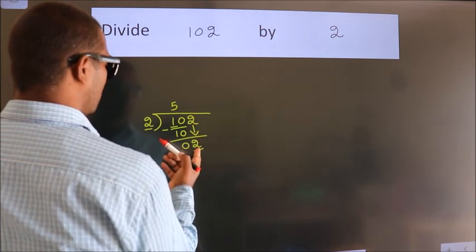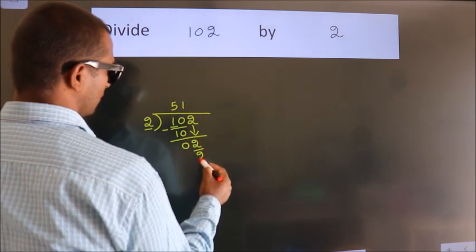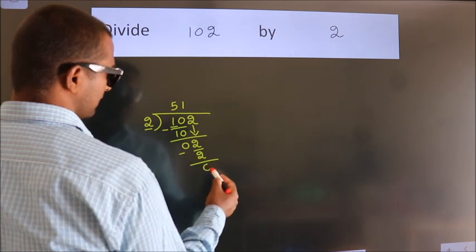When do we get 2? In the 2 table, 2 times 1 is 2. Now we subtract, we get 0.